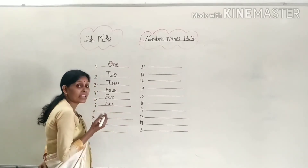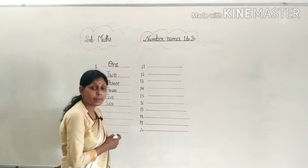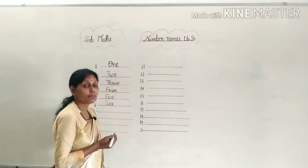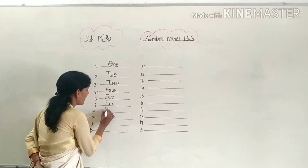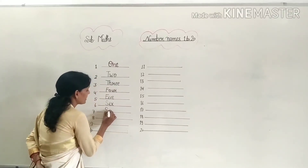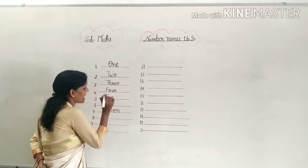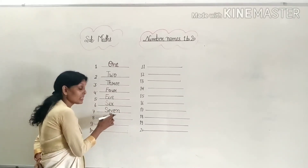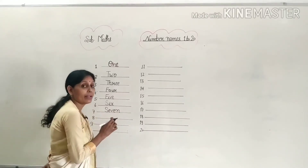And next, 7. What is the spelling of 7? Tell me, what is the spelling of 7? S-E-V-E-N, 7. The spelling of 7 is S-E-V-E-N.